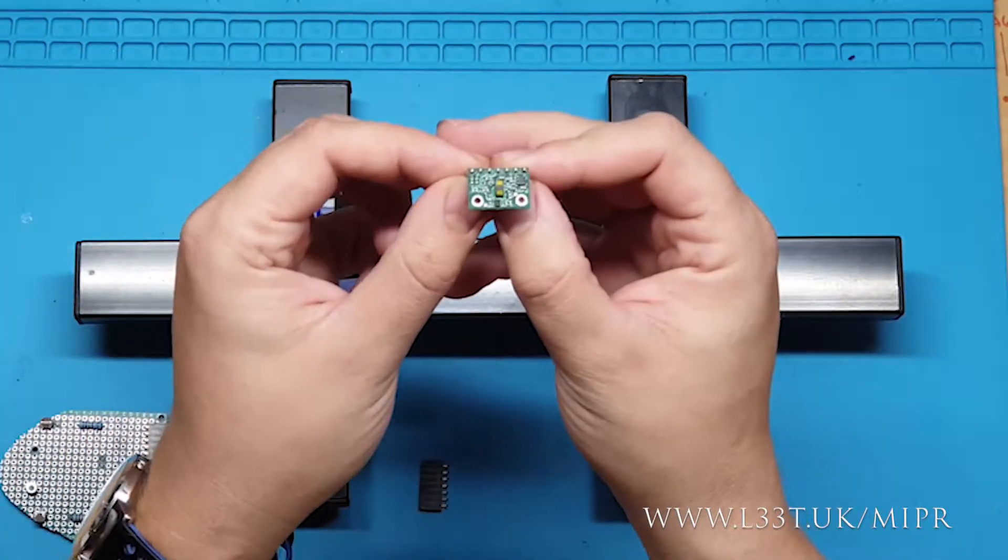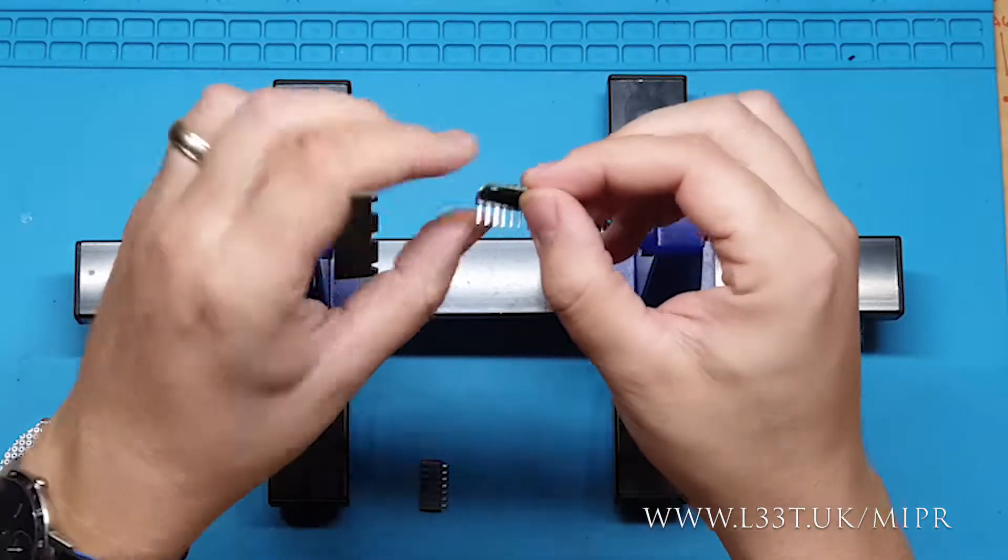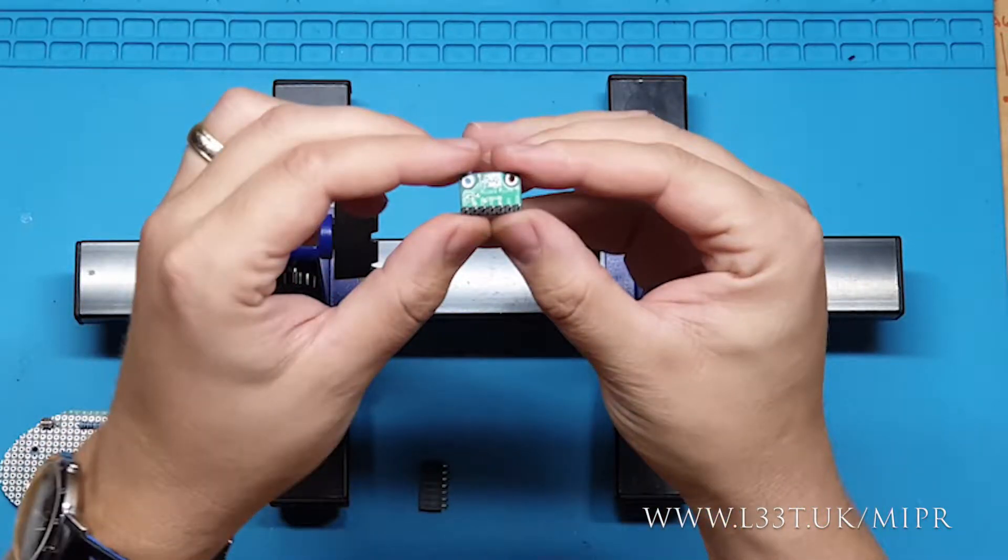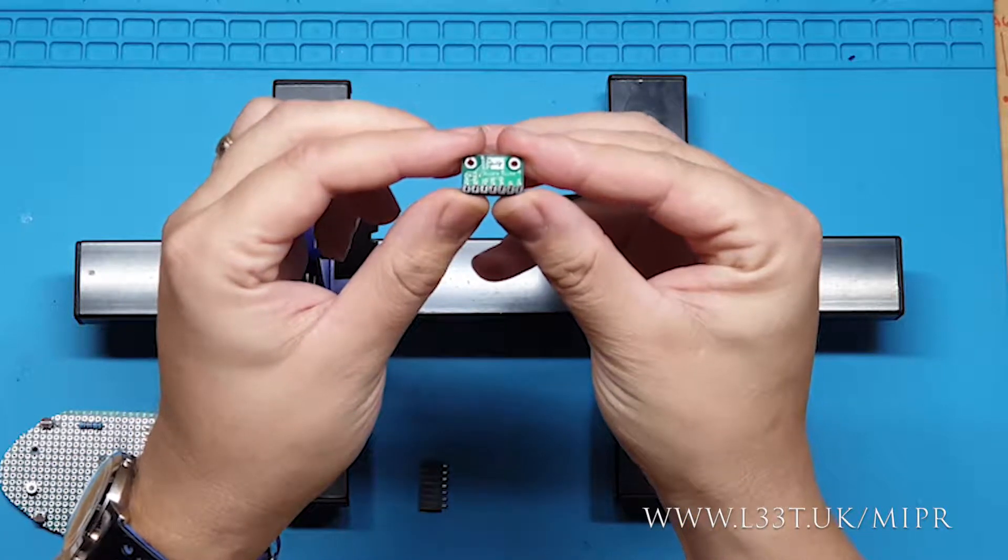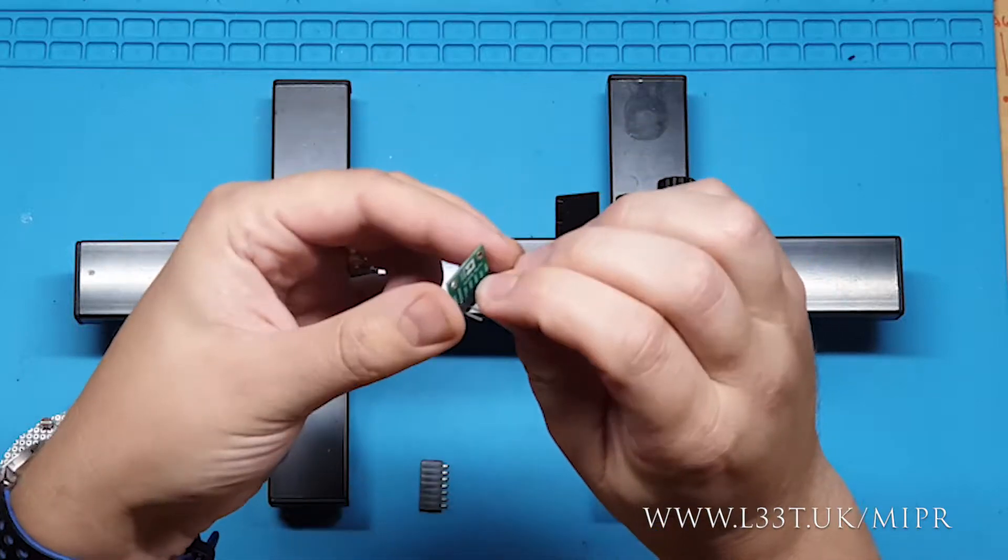This is a STMicroelectronics VL53L1X sensor. It has a maximum distance of 4 meters and is very reliable. It won't block your code and has a maximum refresh rate of 50Hz. This breakout is made by Pololu. Take note of the pin allocations as some manufacturers will order the pins differently.